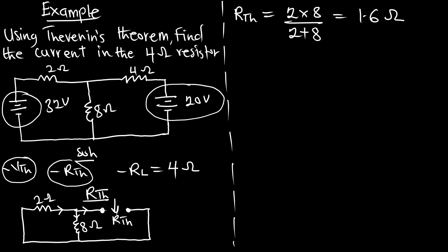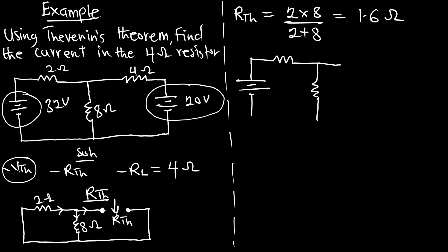Now we have the total resistance. We only need the VTH. The VTH, which is the Thevenin's voltage, is very crucial. We will draw the diagram again with all the sources included. This is our voltage source, this is our 2 ohm resistor, the 8 ohm is also here, and this is the load resistor where we are going to measure our VTH.